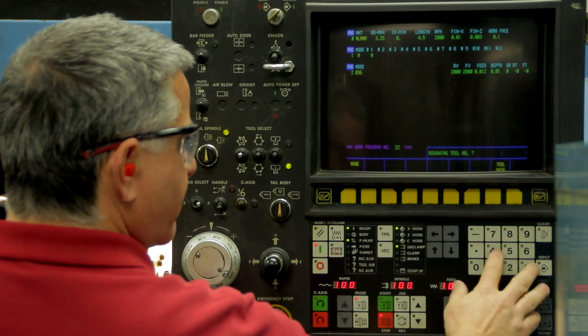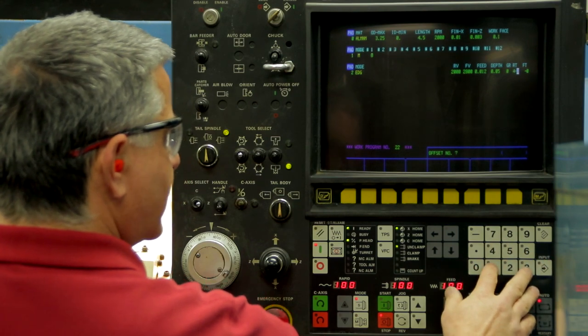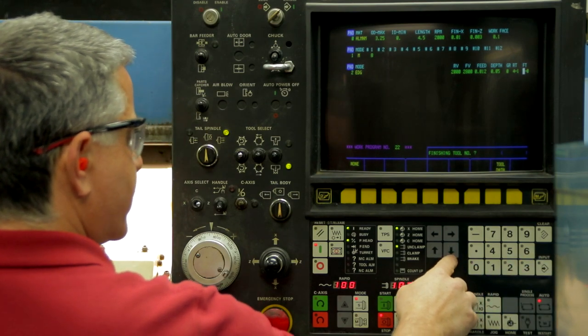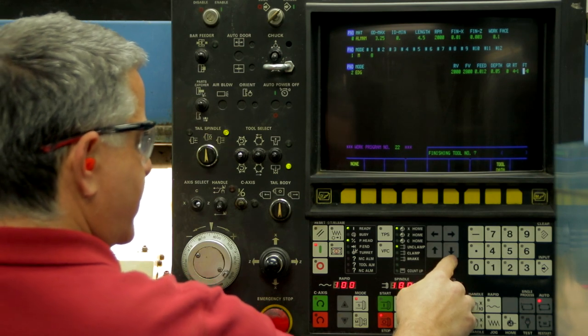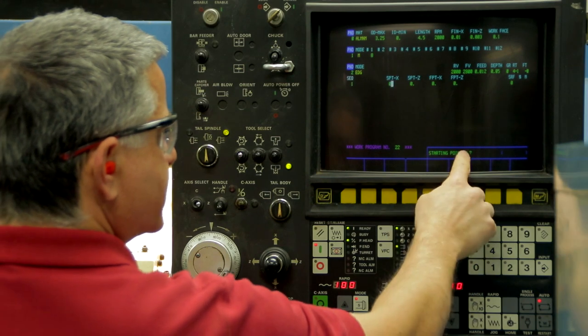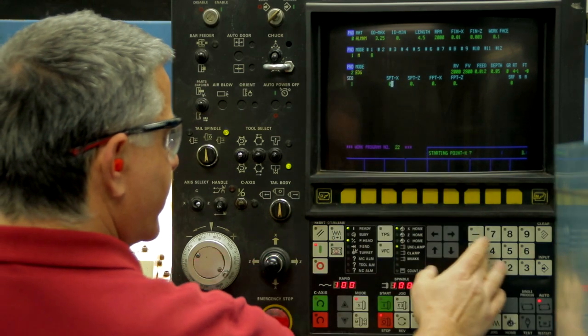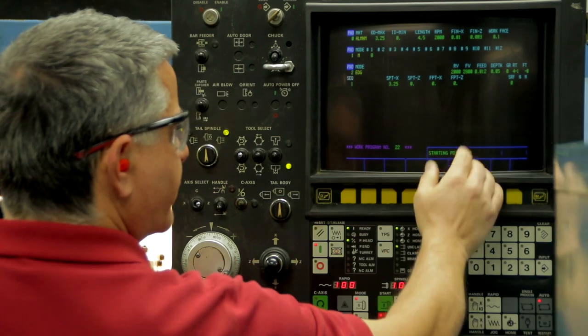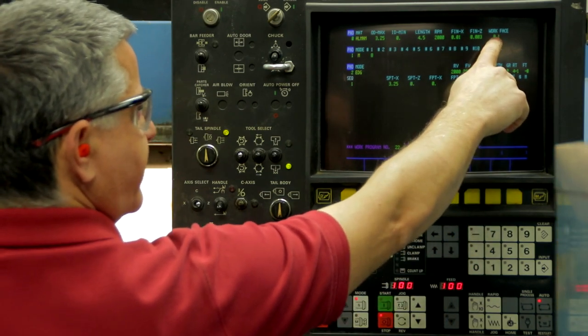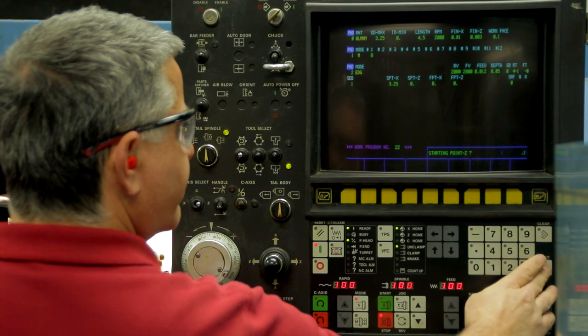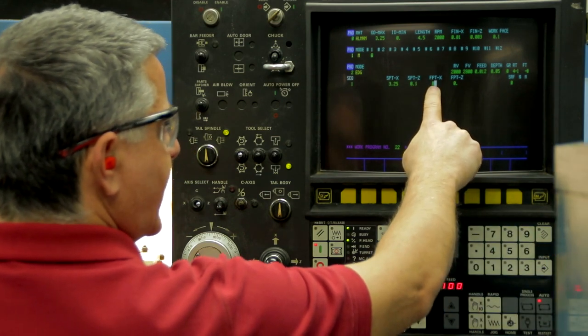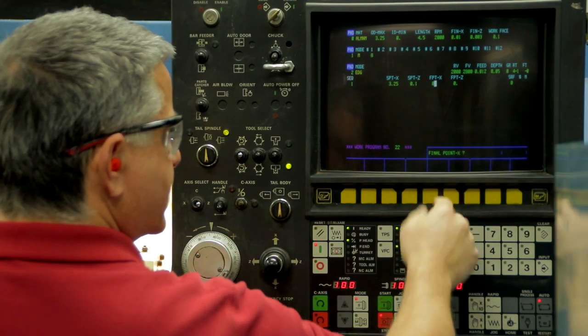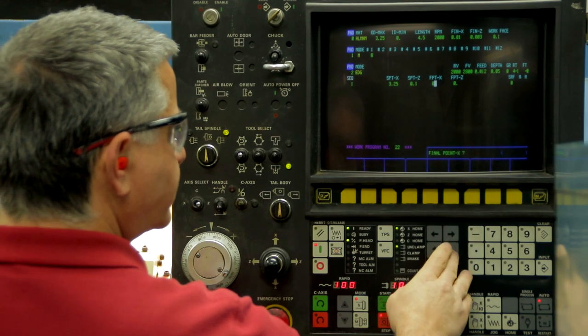We're going to rough it with tool number four. Input, offset, always on this machine, offset number one. We're not going to have a finish tool because it's a sphere, and we're going to finish that with the 35 degree diameter. So down arrow, starting point on X is the stock diameter, 3.25 input. The starting point on Z, the edge process programs to the right of zero. So we're going to program, starting from a hundred thousandths of the work face, final point on X and final point on Z are both zero. And because we have fifty thousandths depth of cut, it's going to take two passes to clean off that face. Down arrow.